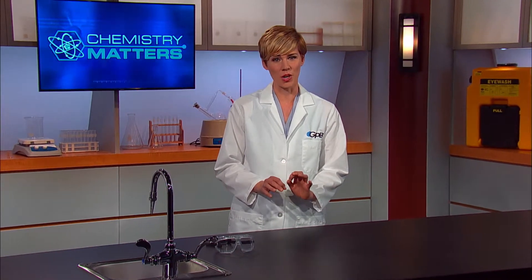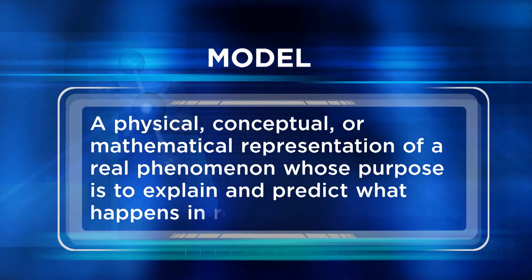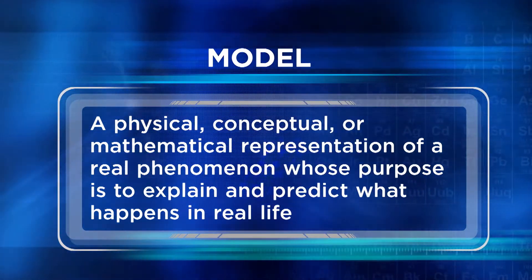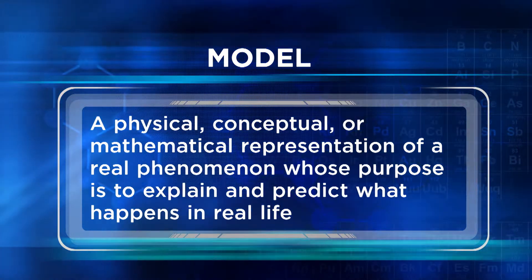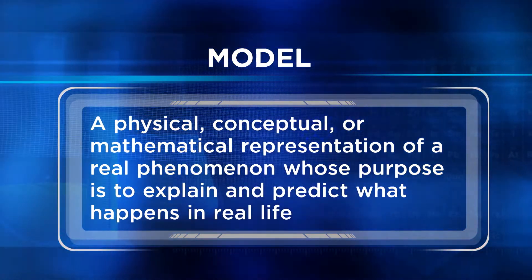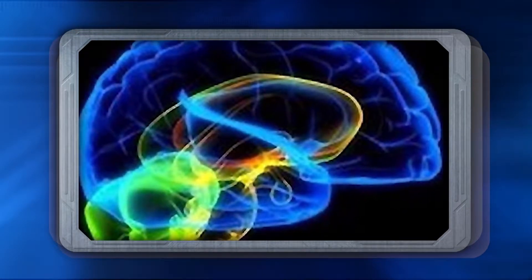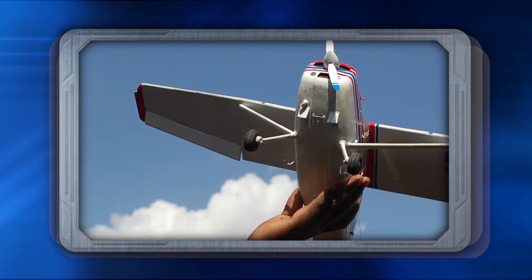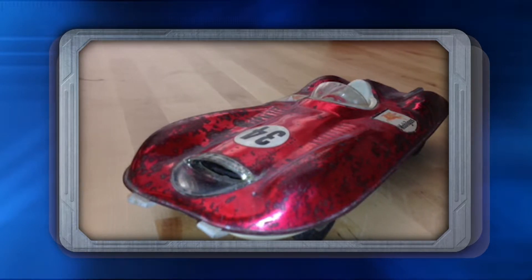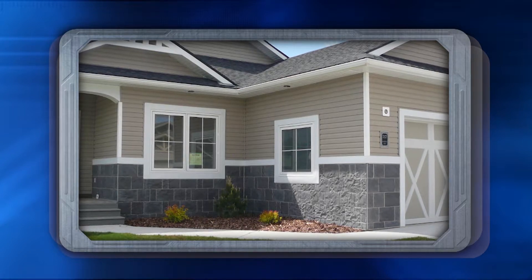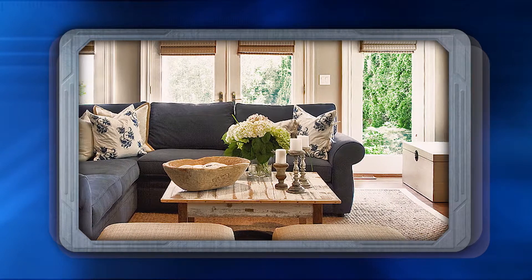After a hypothesis is formed, the next step is usually developing a model to test it. In science, a model is a physical, conceptual, or mathematical representation of a real phenomenon whose purpose is to explain and predict what happens in real life. Models are reasoning tools, and they're usually more complex than hypotheses. A model can be a physical object, a computer simulation, or even an equation. For example, a model of an airplane or car can be built to show how the vehicle might look or move, in smaller scale, of course.